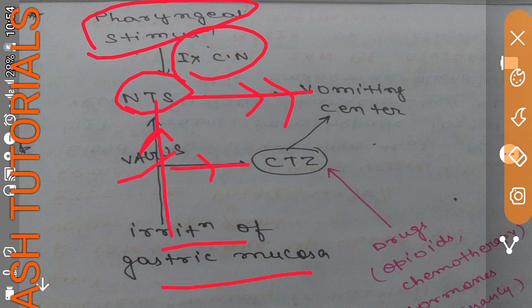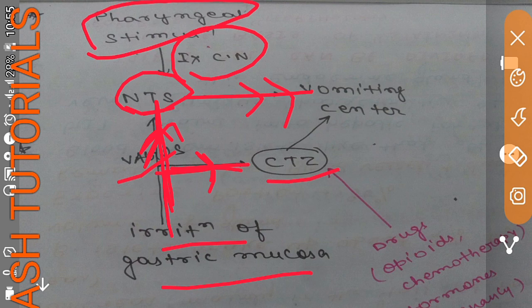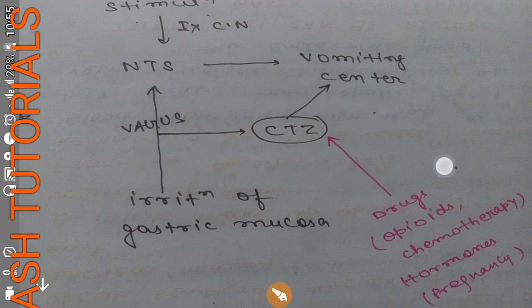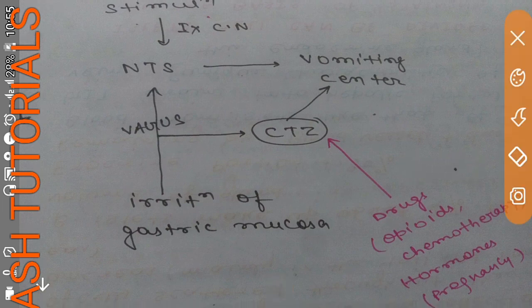A collateral branch from the vagus nerve also goes to the chemoreceptor trigger zone, while another branch goes to the nucleus tractus solitarius. Both the NTS and CTZ together give the vomiting reflex. The CTZ is also stimulated by drugs such as opioids, chemotherapy agents, and hormones.